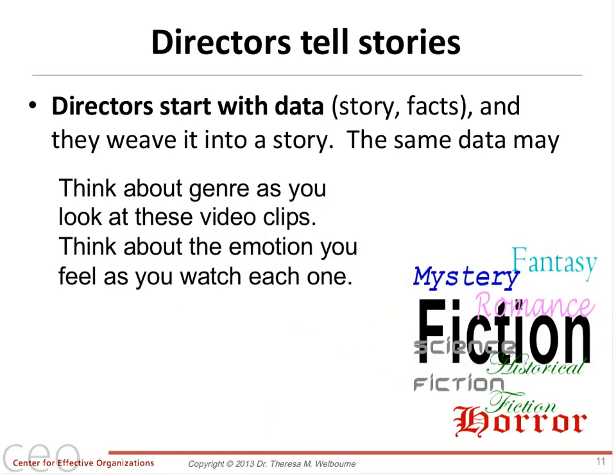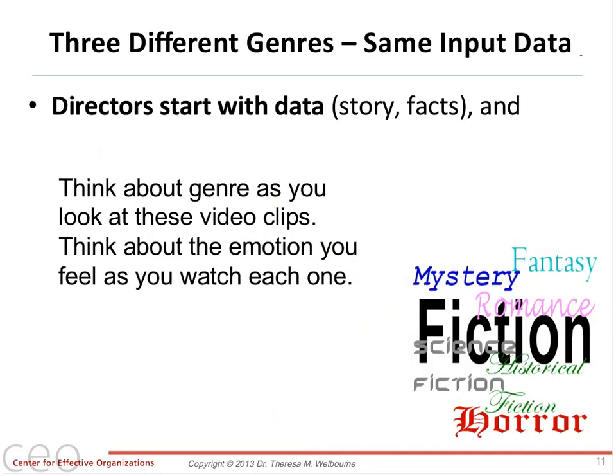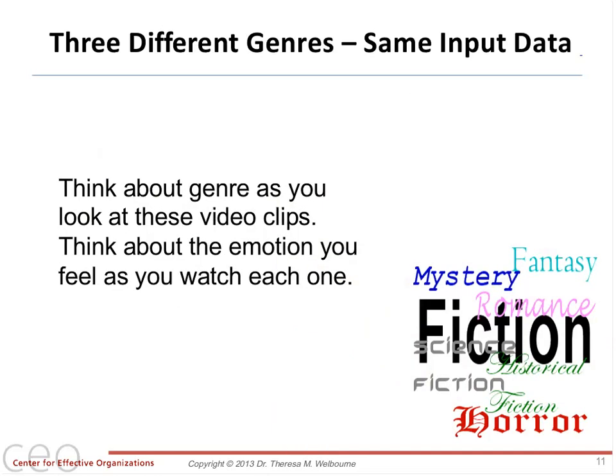Just to give you an example of genre, we're going to play a couple of quick video clips. Look at these and think about what kind of genres they are. Genres are just a way of thinking — you have your horror flick, you have comedy, you have mystery, you have fantasy. There are lists of probably up to 100 types of genre. As you look at each clip, think about the emotion that it makes you feel and what kind of audience we're going after.